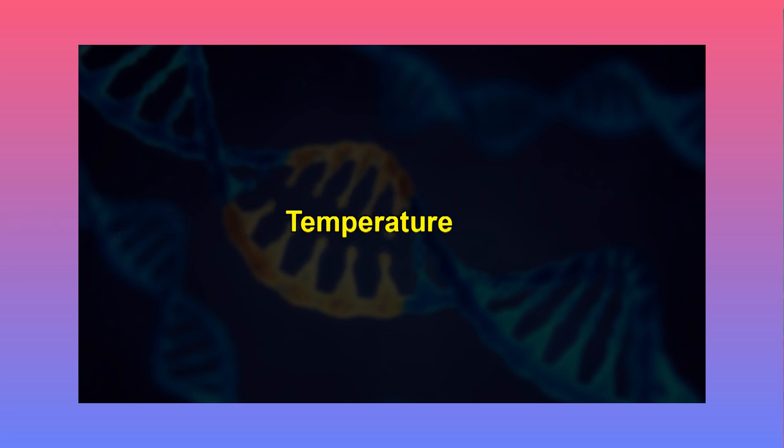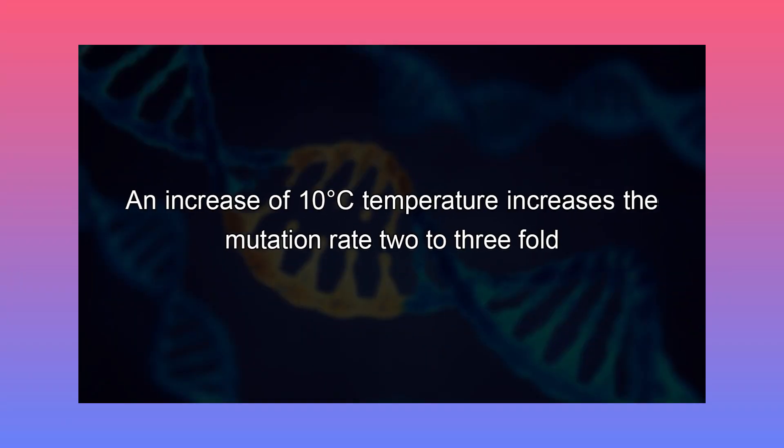Temperature is another factor. The rate of all chemical reactions is influenced by temperature, and it is reported that the rate of mutation is increased due to an increase in temperature. For example, an increase of 10 degrees centigrade increases the mutation rate 2 to 3 fold. Temperature probably affects both the thermal stability of DNA and the rate of reaction of other substances with DNA.